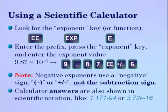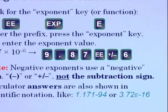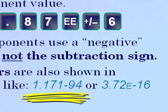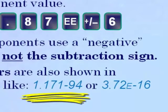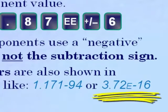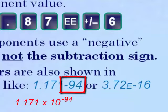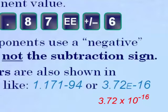The calculator answer that you get will also be shown in scientific notation. So it'll look like 1.171 with a little negative 94, or 3.72 with an E and a negative 16. Notice that that little negative symbol there tells you that that's an exponent of 10 to the negative 94, or 10 to the negative 16.